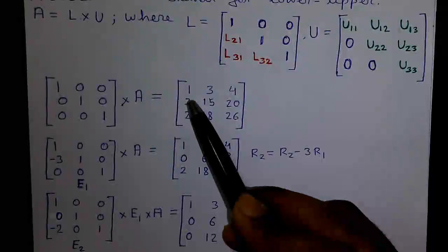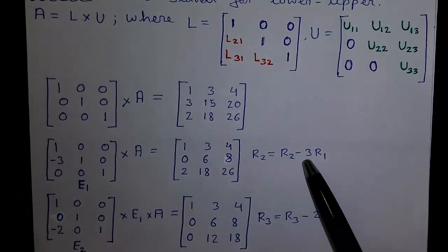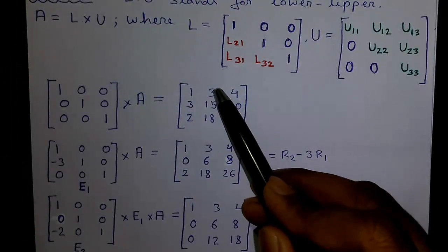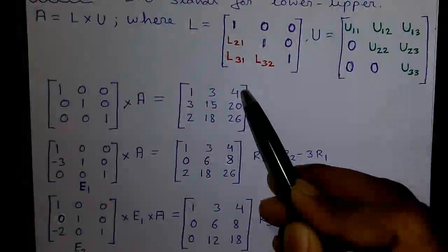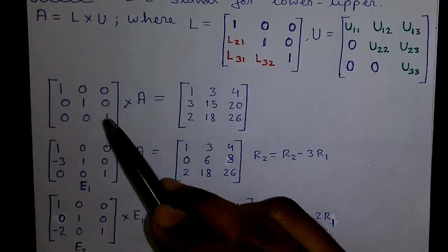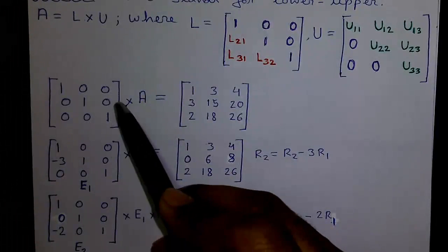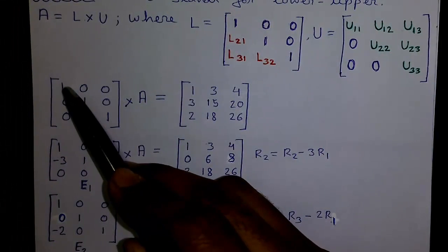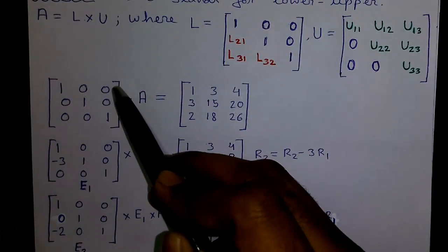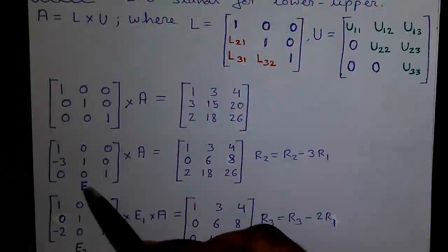To get a 0 at the first sub-diagonal position, we multiply R1 by 3 and subtract from R2: R2 = R2 − 3R1. Computing: 3−3×1=0, 15−3×3=6, 20−3×4=8. R3 remains the same. We perform the same operation on the left-hand identity matrix: 0−3×1=−3, 1−3×0=1, 0−3×0=0. This gives us elementary matrix E1.